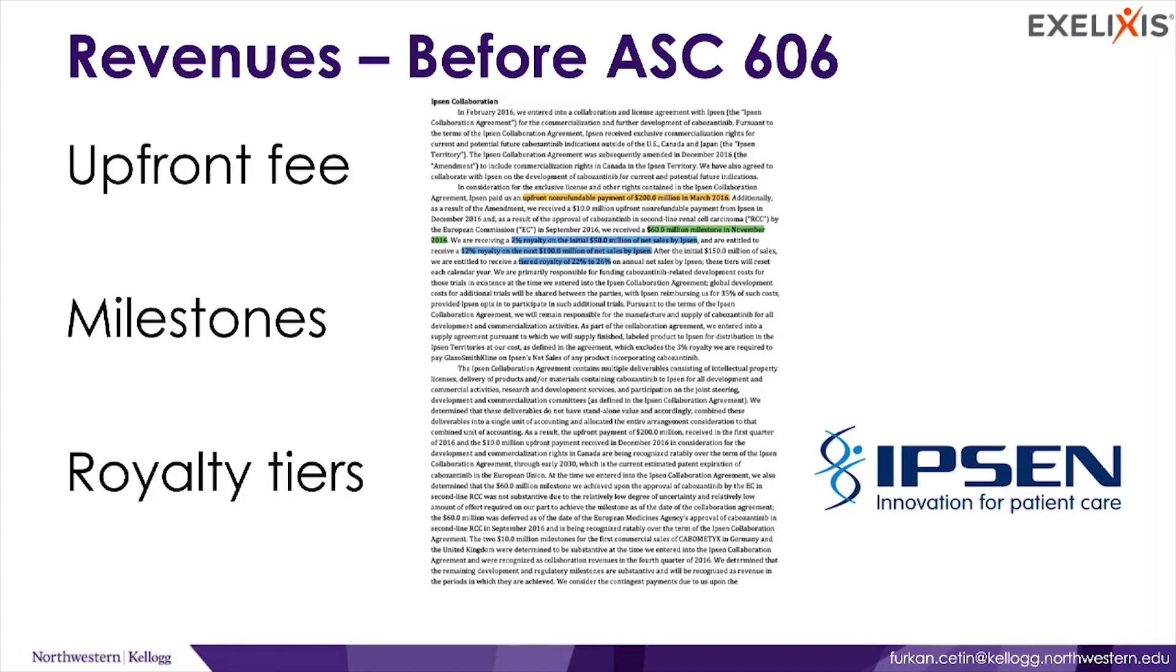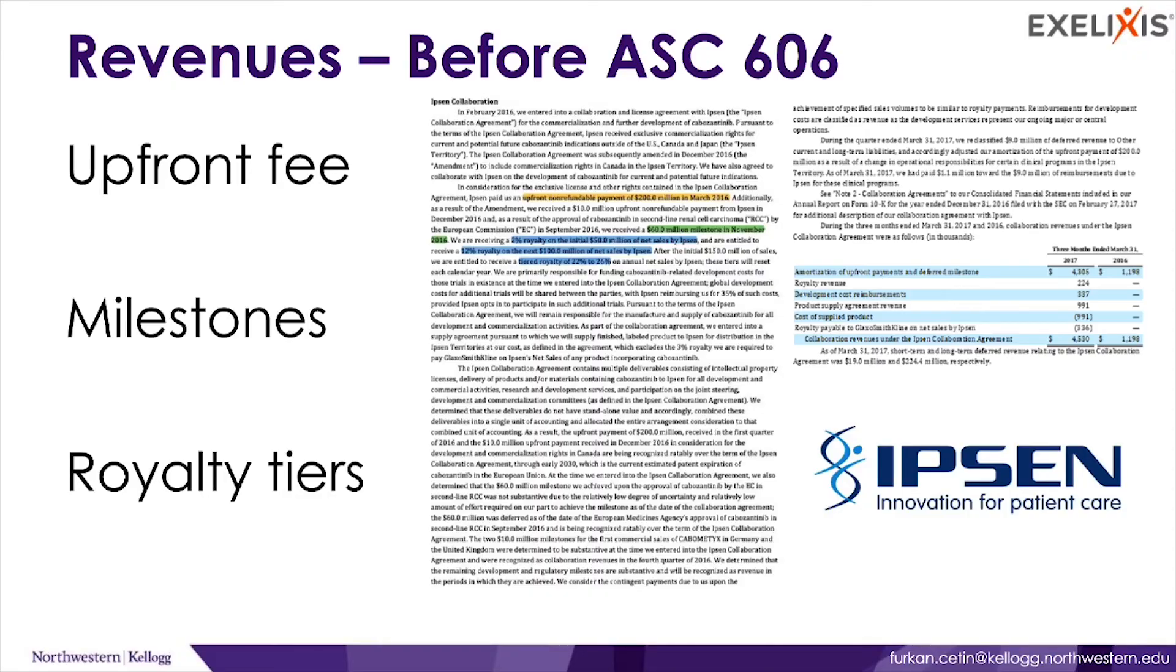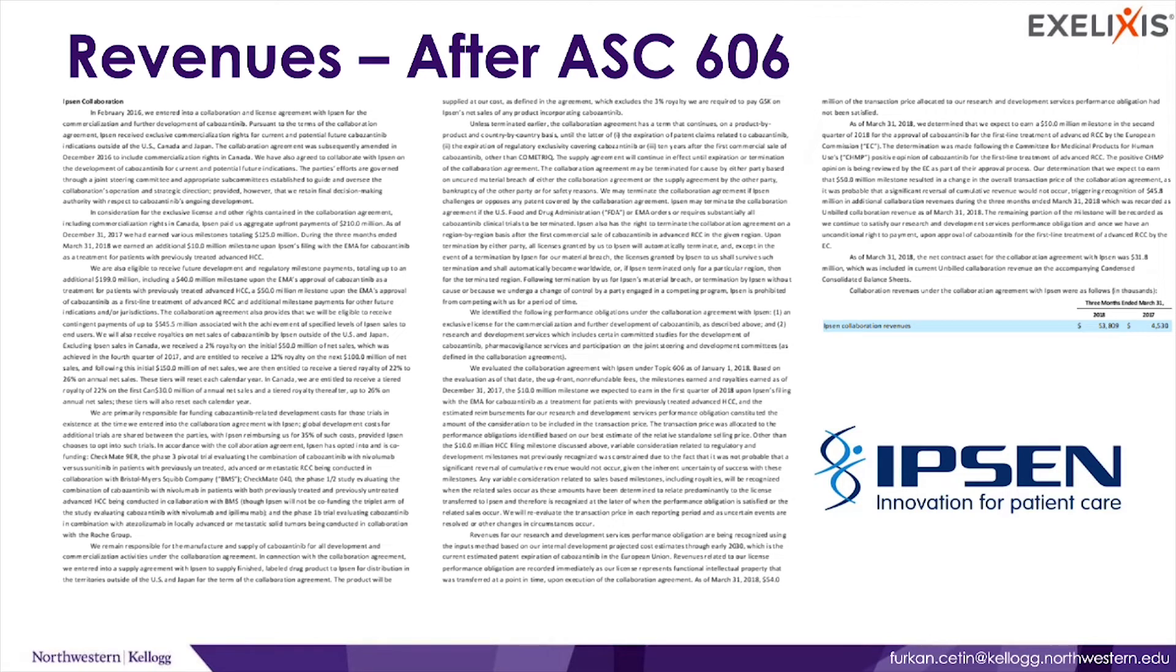And EXELIXIS explains its revenues with one and a half page disclosures just from Ipsen. Actually, it's before ASC 606. But after ASC 606, the new standard, their disclosure doubled, and they record their revenues earlier.